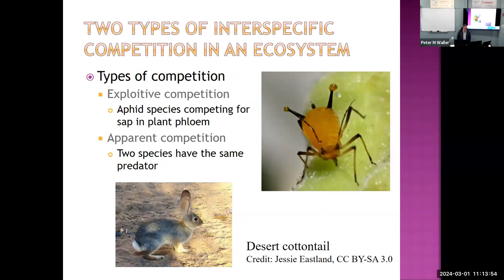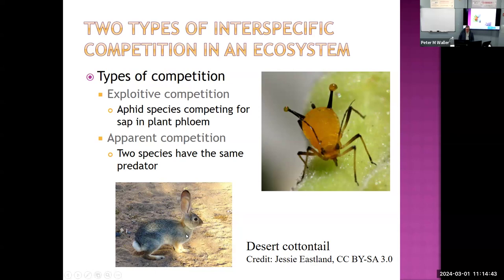There are at least two types of interspecific competition. One is exploitative competition — for example, aphids competing for plant sap using their piercing, sucking mouthparts. Contributing factors to competitive advantage include mouthpart configuration, ability to fly, pesticide resistance, reproduction, and some aphids kill predator larvae by secreting toxic chemicals. The other type is apparent competition, such as the desert cottontail, where two rabbit species avoid coyotes and other desert predators, with advantages including speed, alertness, reproductive rate, and camouflage.